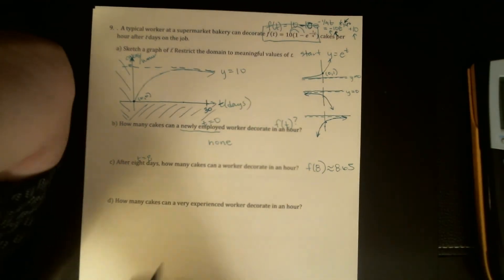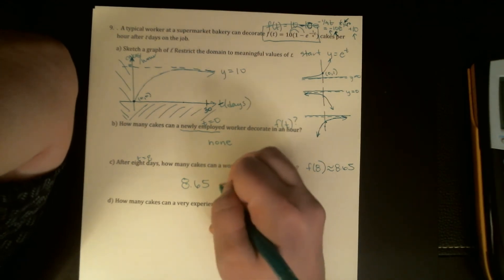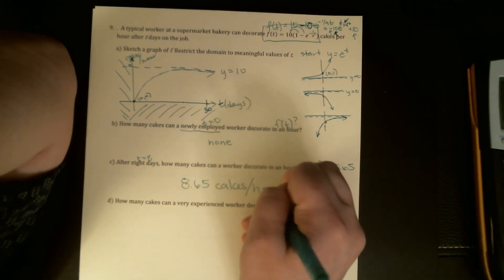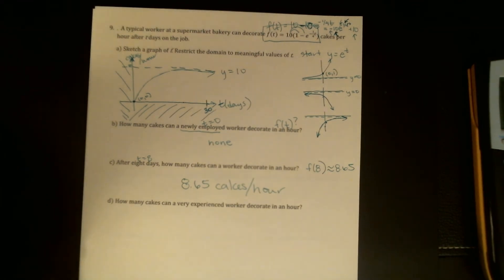Okay, eight days, how many cakes? So I would say we don't need a complete sentence there, but we should put some units on that. So 8.65 cakes per hour. And I do think the decimal is appropriate here. I would say this is how many they can finish in an hour. So it's perfectly reasonable to say that they don't quite finish the ninth cake in their hour. So I don't have any problem with the decimal here. But you should think about that. If this was, I don't know, number of people, we might be a little alarmed about having fractional number of people, just depends on the situation.